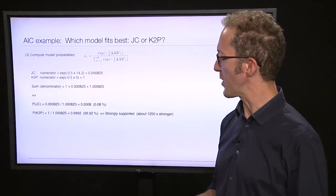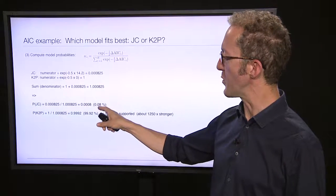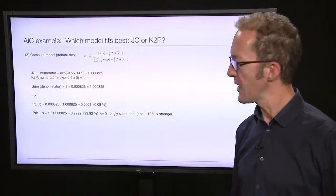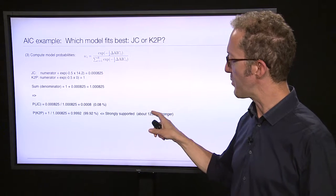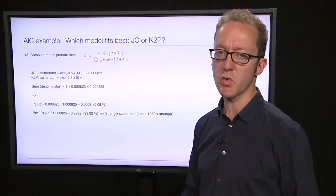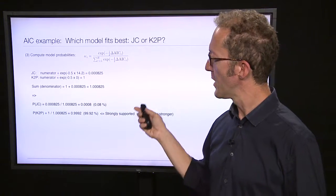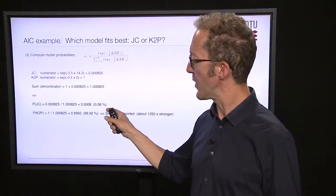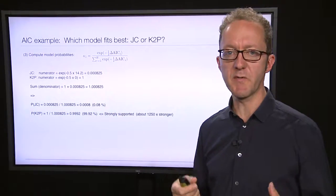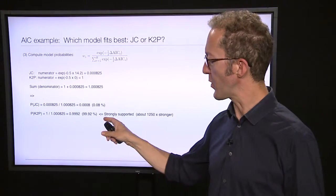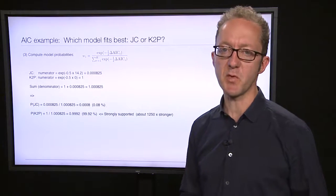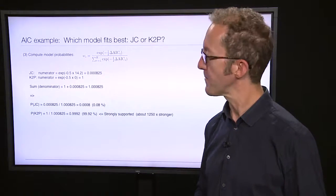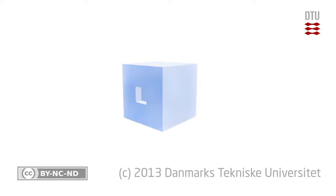This means K2P is very strongly supported — our degree of belief in this model is about 1,250 times stronger than our belief in Jukes-Cantor. This way of using probabilities allows us not only to select the model we believe in most, but also to quantify exactly how much more belief we have in it, which is an extremely useful thing.